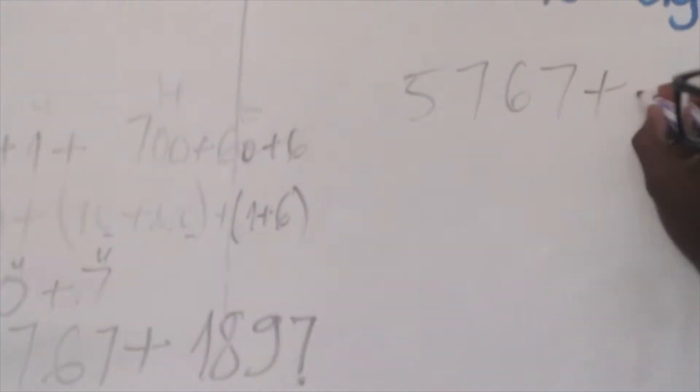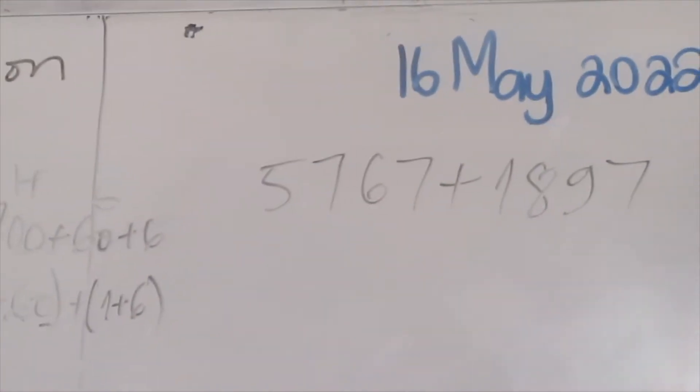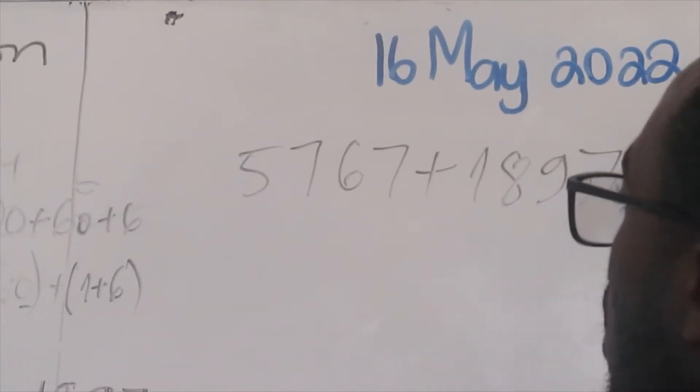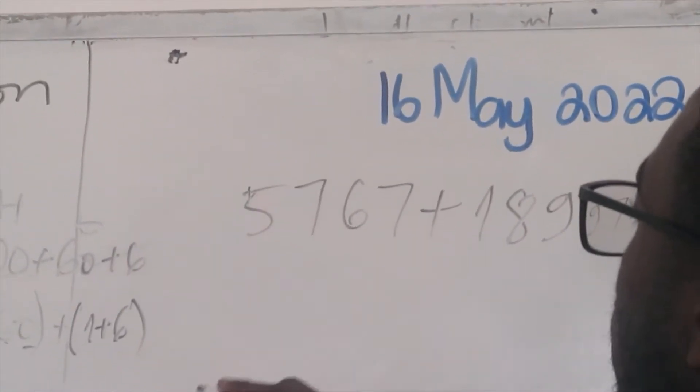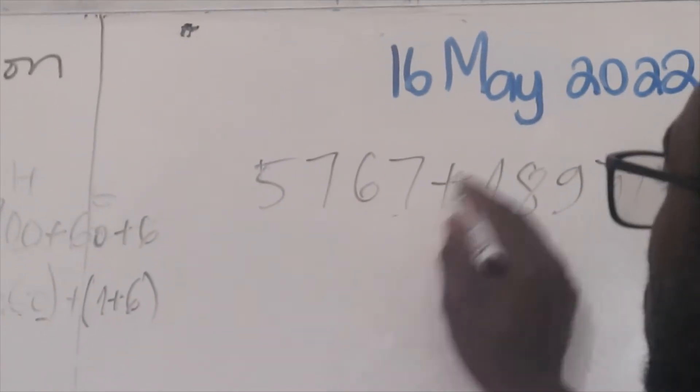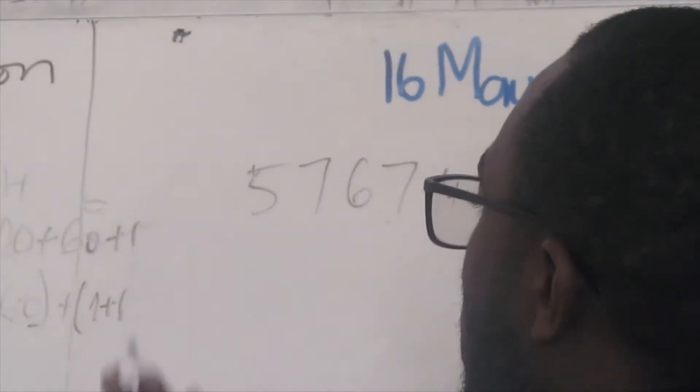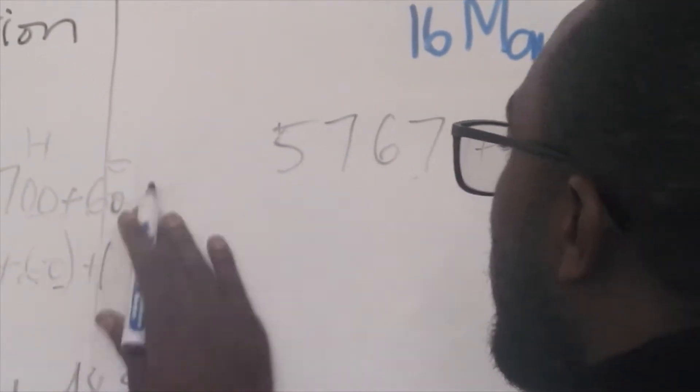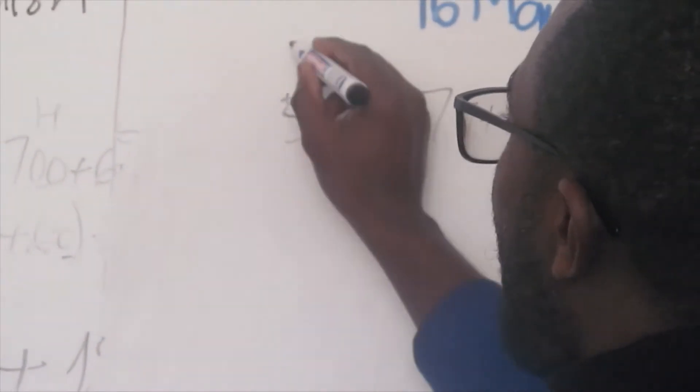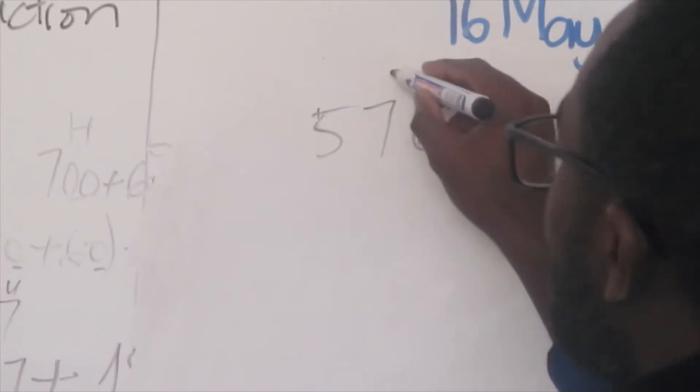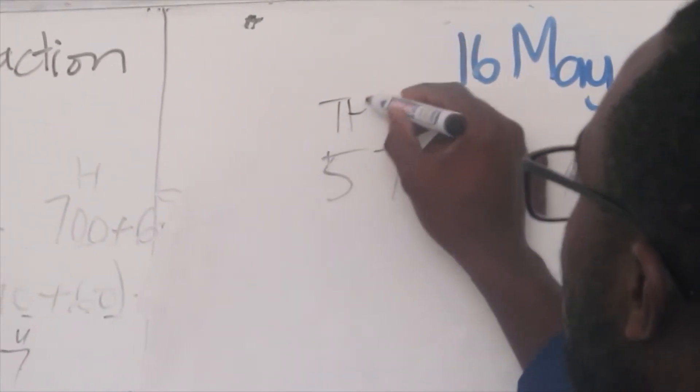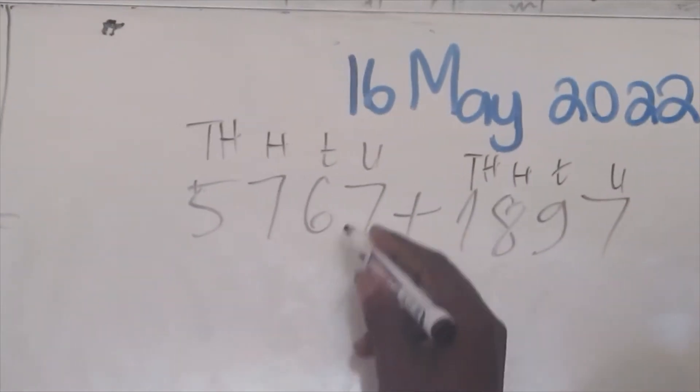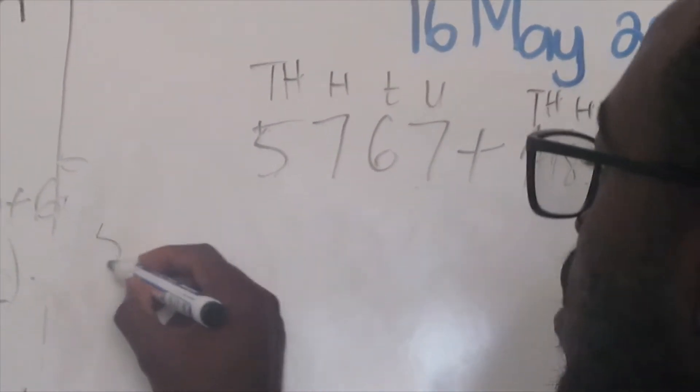5,767 plus 1,897. How to add this one using the place value? Let us break this number using the breakdown method. In this number here we have units, tens, hundreds, and thousands. It's the same on this side: units, tens, hundreds, and thousands.